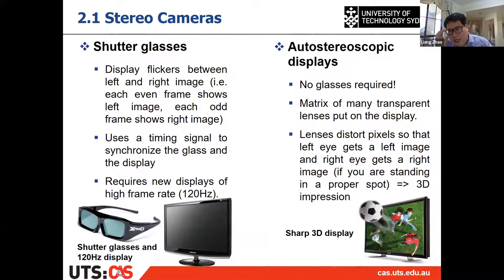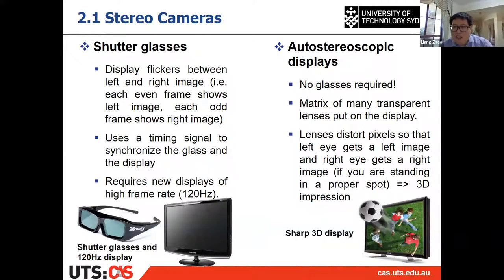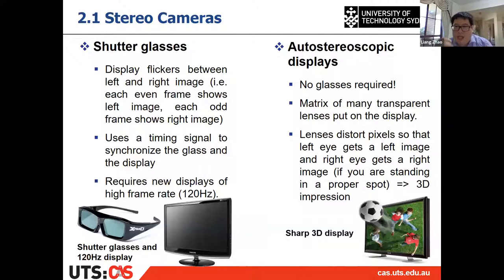The principle is to let your left eye look at the left image and your right eye look at the right image. Because different eyes look at different images with some kind of shift between them, you can see the 3D view. There are also auto-stereoscopic displays that use lenses on the screen, but they are quite expensive and not commonly used at the moment.